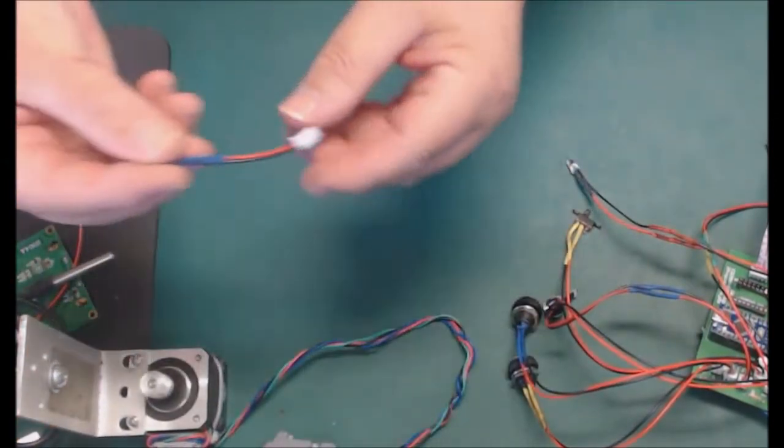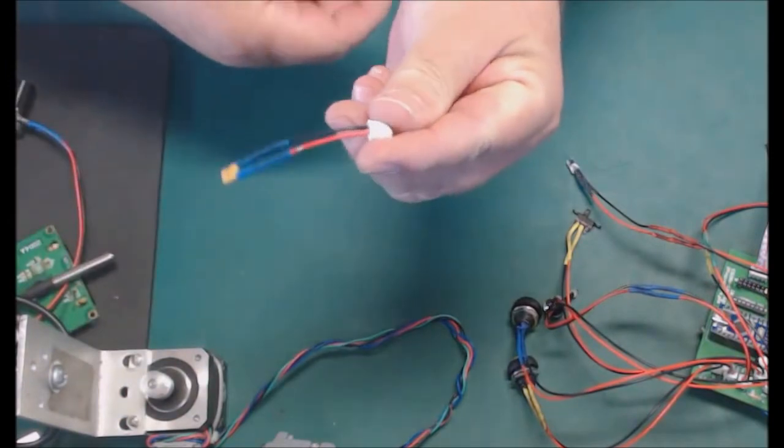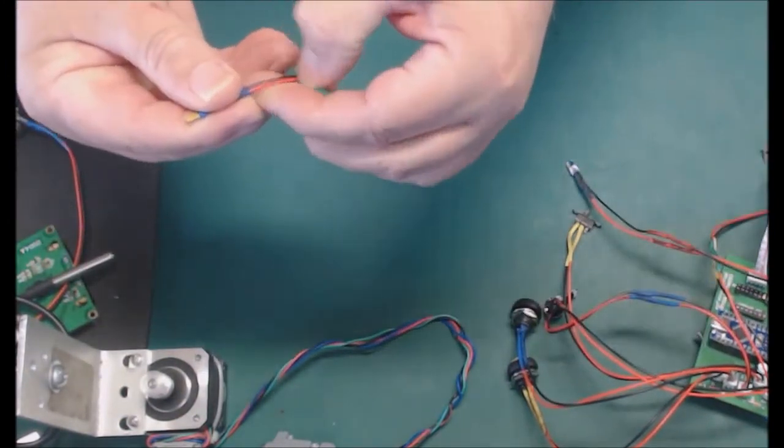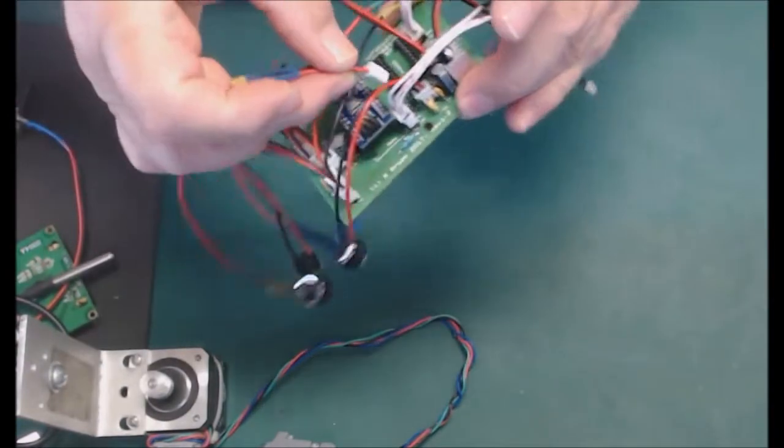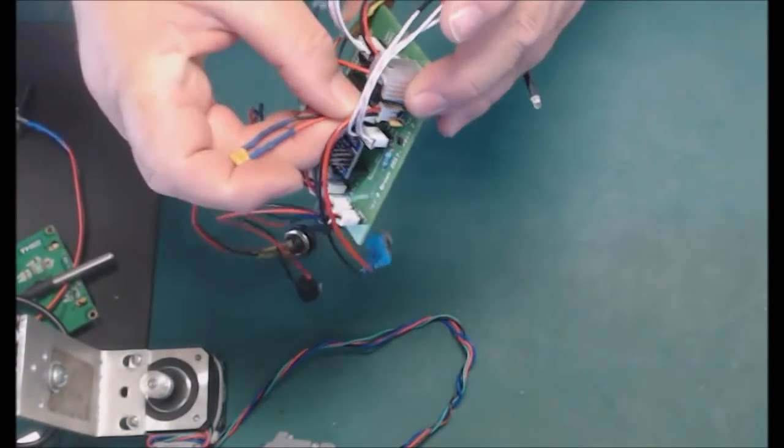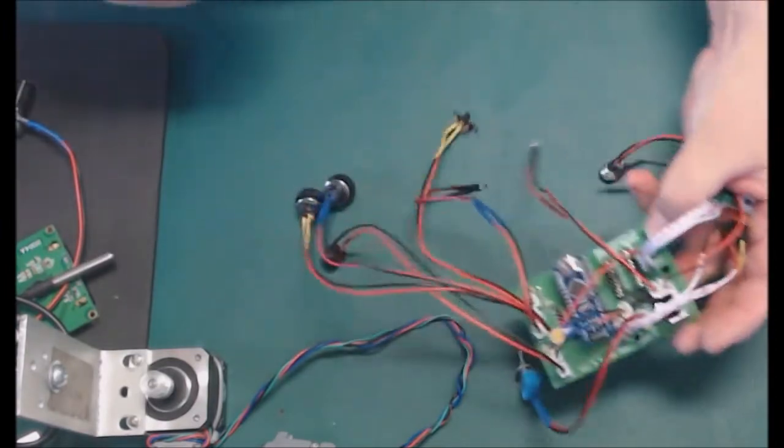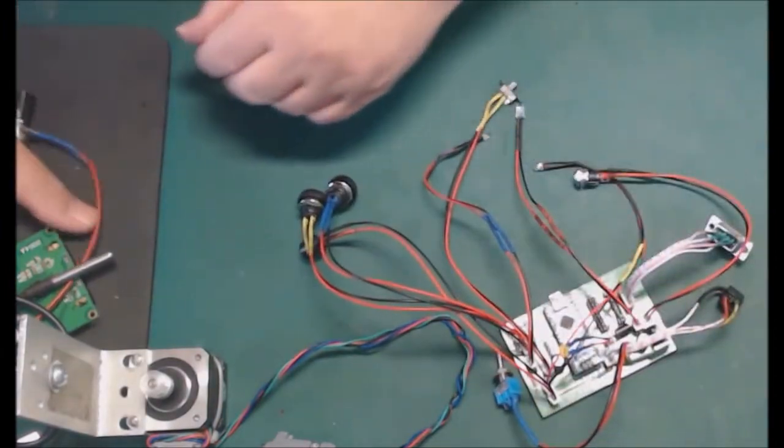I've got the resettable fuse, I've wired it to a 2-pin header, it doesn't matter which way round it goes. So this is the resettable fuse, goes in there like that, and it's okay just to sit there.